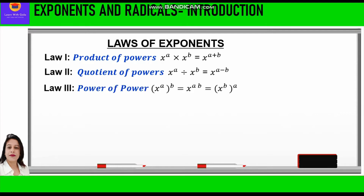The third law is power of power, that is x raised to power a, whole raised to power b, is equal to x raised to power a into b. That means whenever we have two powers — one inside and one outside — we multiply both of them.